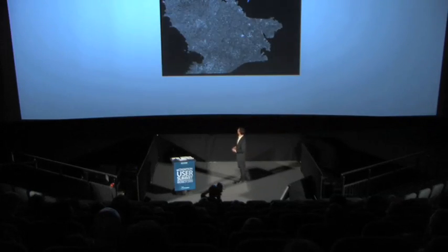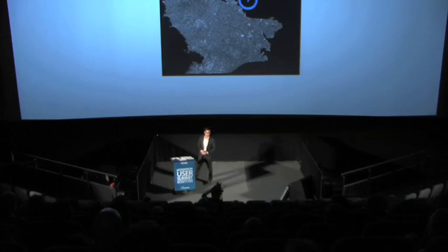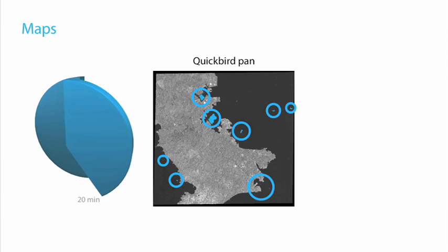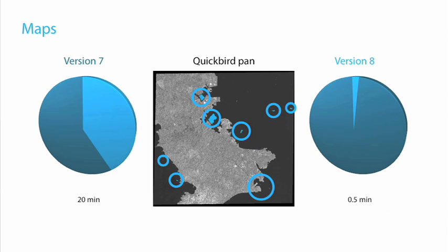Finding islands on a large QuickBird scene is a really challenging task — like finding needles in a haystack. In version 7, you would need to segment the entire data set to find all areas of interest, which took around 20 minutes. If you now look at the time it takes in eCognition 8, you'll agree that's quite an astonishing gain in performance.